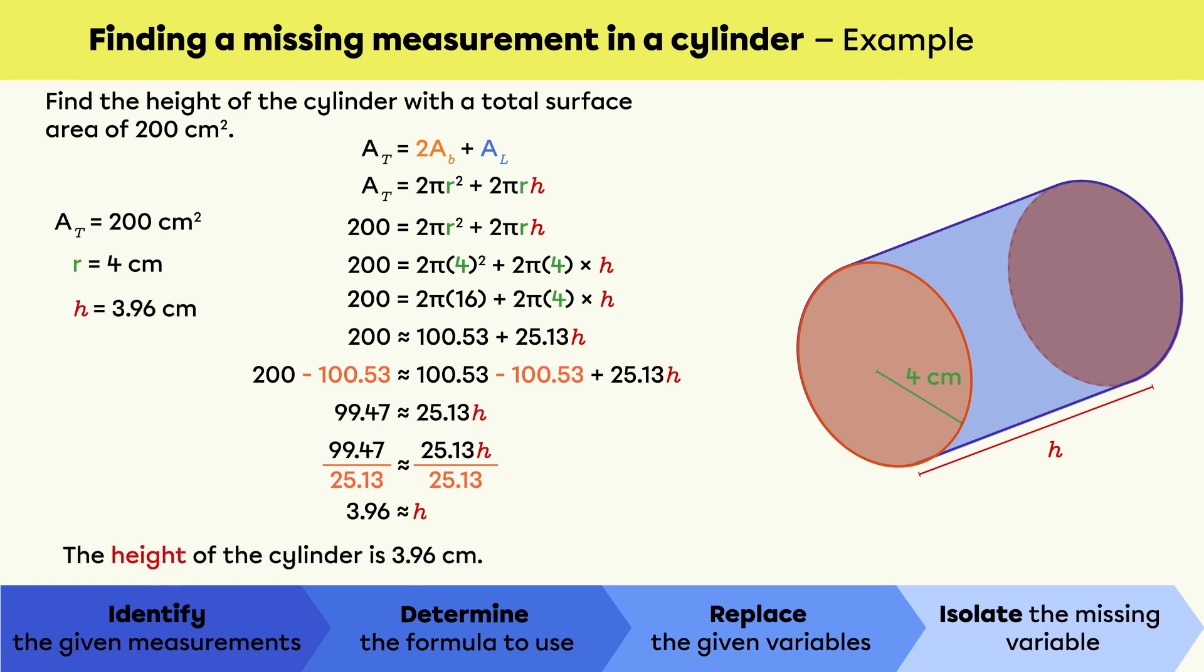Therefore, the height of the cylinder is 3.96 centimeters. That's it. I hope this video has helped you understand how to find a missing measurement in a cylinder.